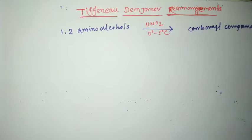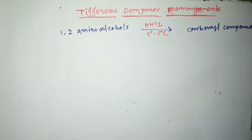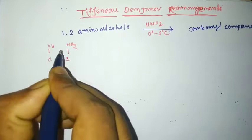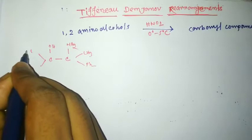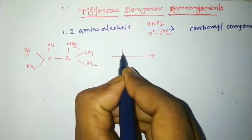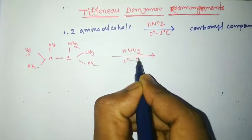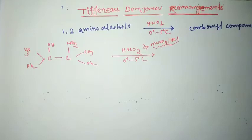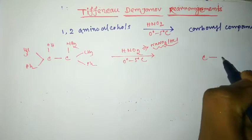Let us take a 1,2-amino alcohol. This is a 1,2-amino alcohol when treated with nitrous acid and temperature 0 to 5 degrees Celsius. Nitrous acid means NaNO2 and HCl.